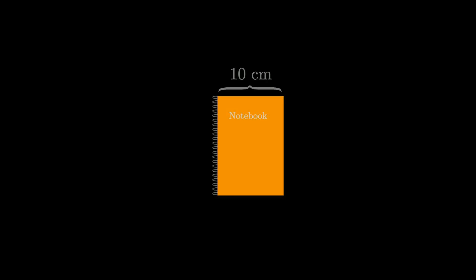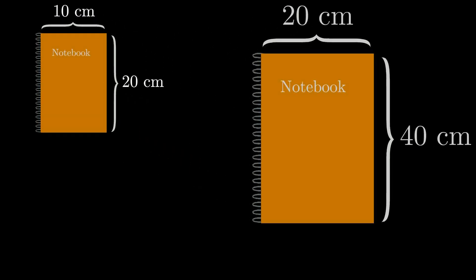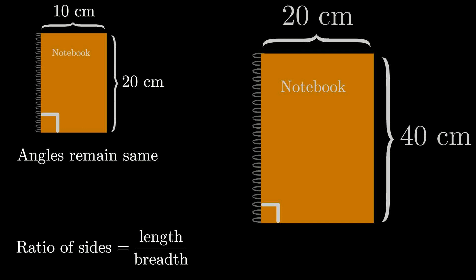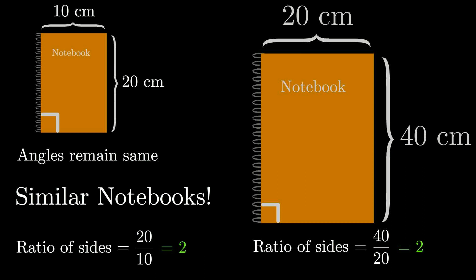Consider a notebook that you have. It is 10 centimeter wide and 20 centimeter long. Now let's take this notebook and make it bigger. Now we have two notebooks which look exactly the same except one is just a bit bigger. All angles of the notebook remain exactly the same at 90 degrees. Now let us find the ratio of the side lengths. We do the length of the notebook divided by the breadth and that gives us 20 divided by 10 which is 2. For the larger notebook, the ratio of the side lengths is 40 divided by 20 which is again 2. These notebooks are perfect examples of similar shapes where we make one object bigger and the angles remain the same but the side lengths change proportionally.